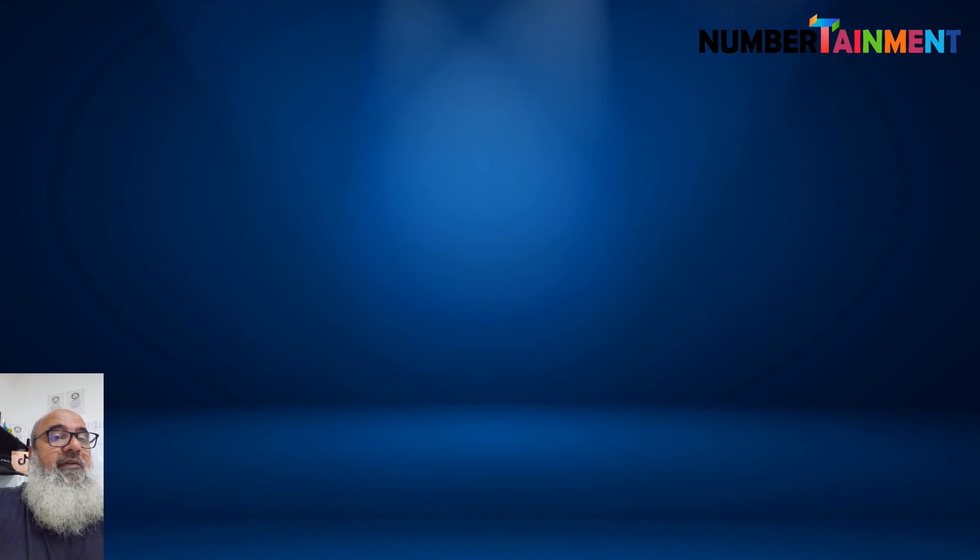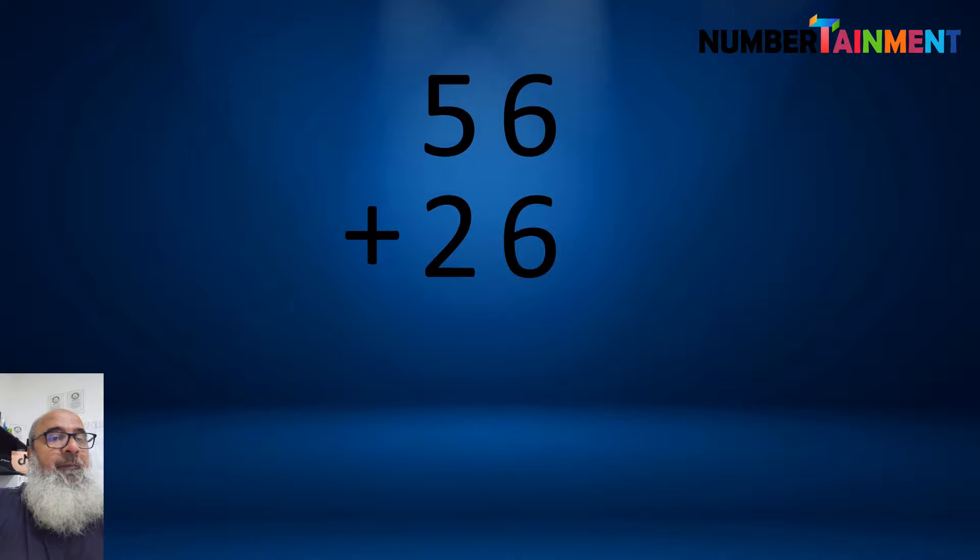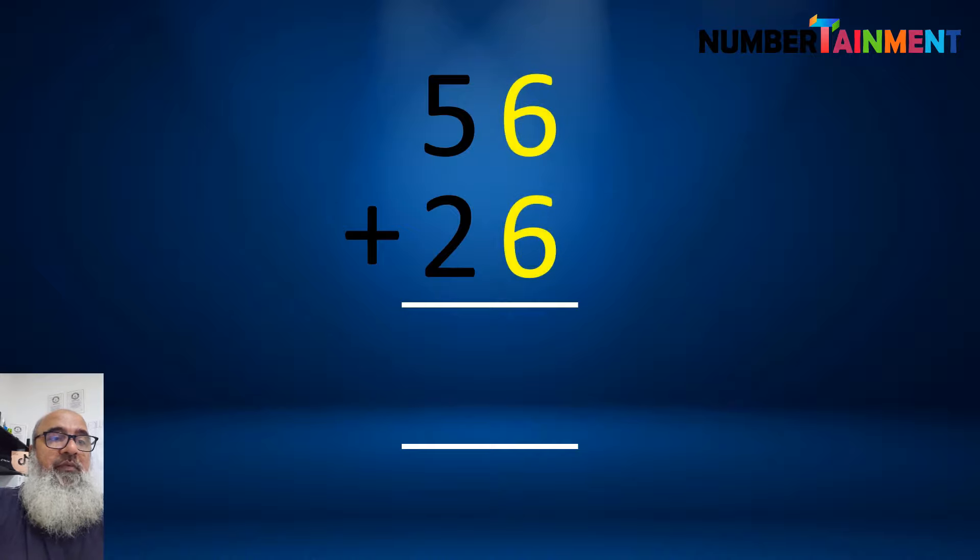The normal way to add, let's say 56 plus 26, is to put the numbers under each other like this and add from right to left. First in the units, 6 plus 6 is equal to 12. So bring down 2 and carry 1.